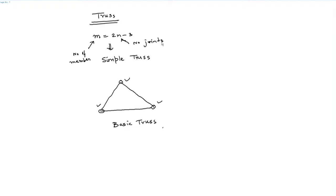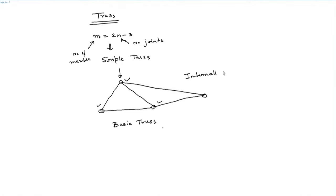If you extrude 2 members and connect by a pin, this is again a simple truss. The basic philosophy is that a simple truss is internally rigid — meaning under the action of load, the internal members should not change angle, so the truss will not collapse.